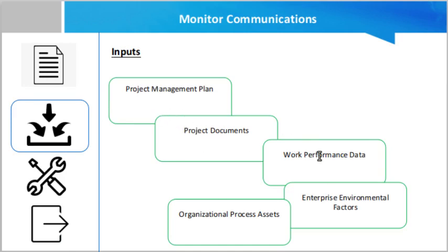Work performance data contains data on the types and quantities of communication that have actually been distributed. Enterprise environmental factors include the organizational culture, political climate, governance framework, communication channels, and global, regional, or local trends. Organizational process assets include corporate policies and procedures, communication requirements, historical information, and stakeholder and communication data from previous projects.